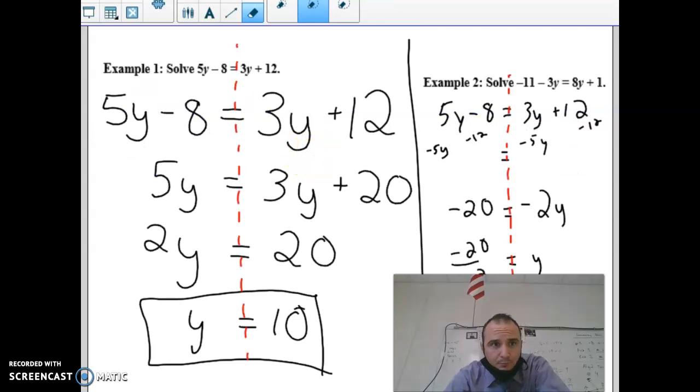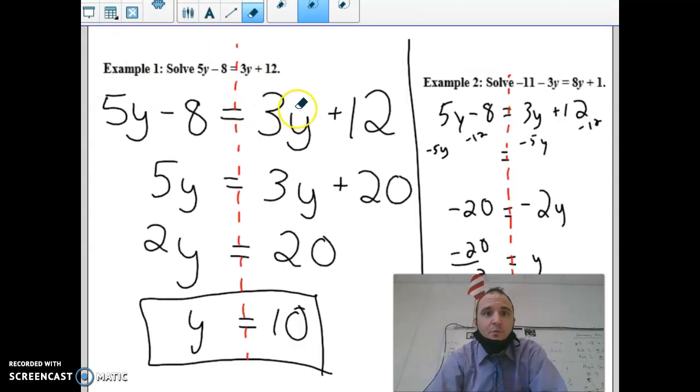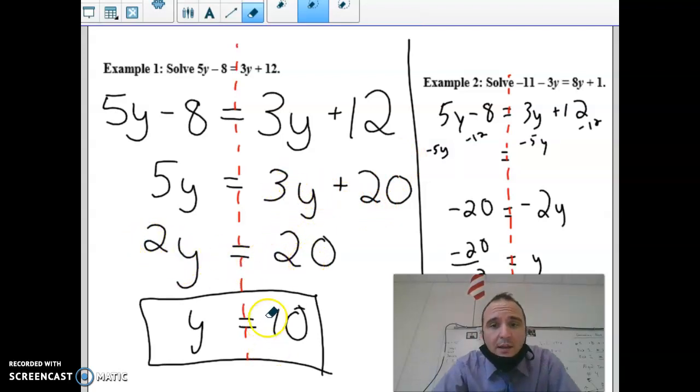So let's go over it. For this one, we're going to move the 3y to the other side. When you move, first we move the 8 to the right by adding it. Then we move the 3y to the other side, getting 2y equals 20, y equals 10.